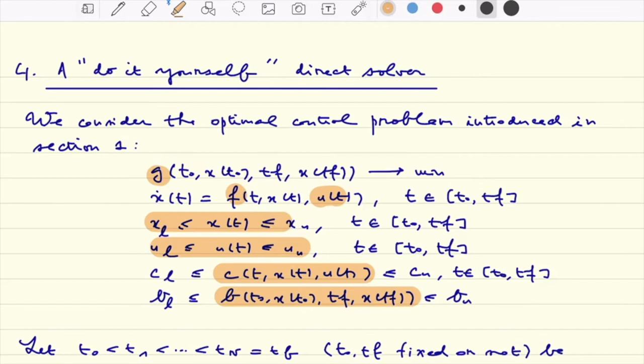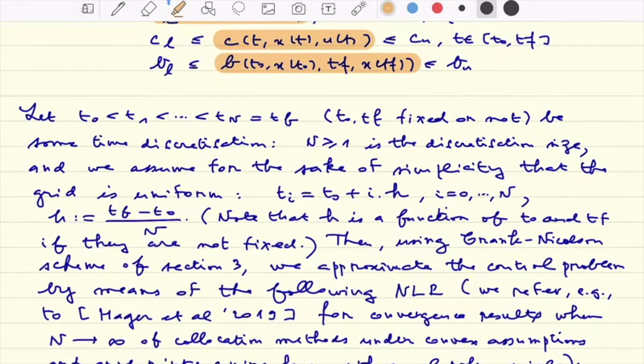Imagine that we have some grid of points t0, t1 to t capital N which is tf in our case. For the sake of simplicity we will just assume that the discretization is a uniform one.